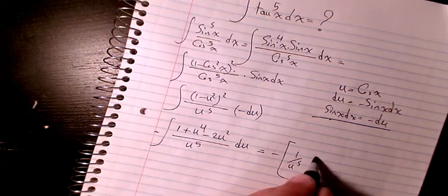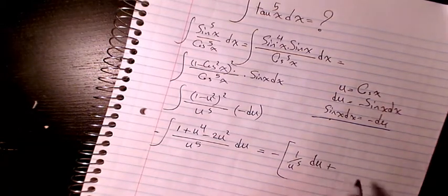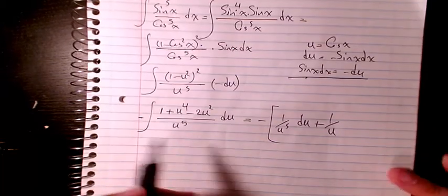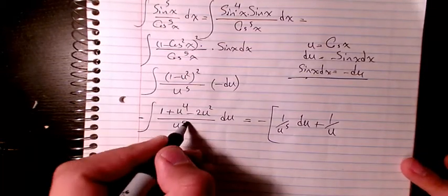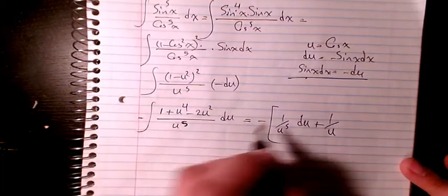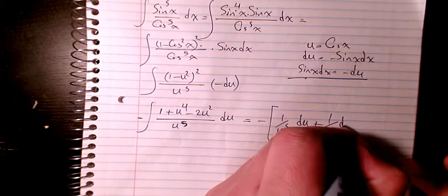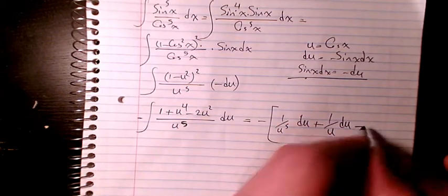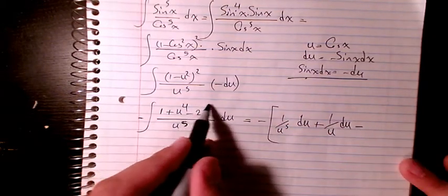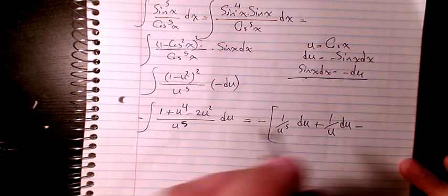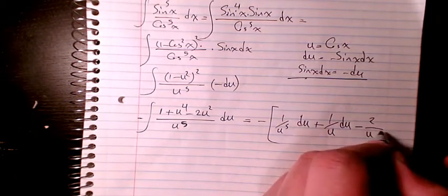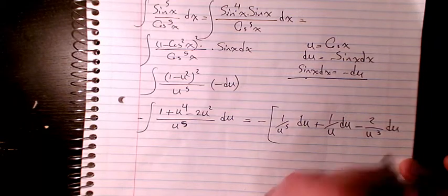This splits into: 1 over u to the power of 5 du, plus u⁴ divided by u⁵ which is 1 over u du, minus 2u squared divided by u to the power of 5 which is 2 divided by u to the power of 3 du — all multiplied by negative.